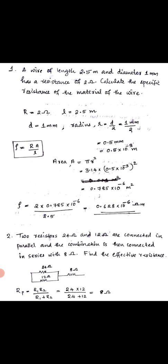Second question: Two resistors, 24 ohm and 12 ohm, are connected in parallel. The combination is then connected in series with 8 ohm. Find the effective resistance.